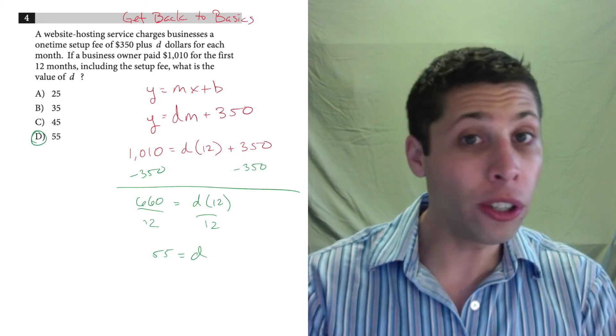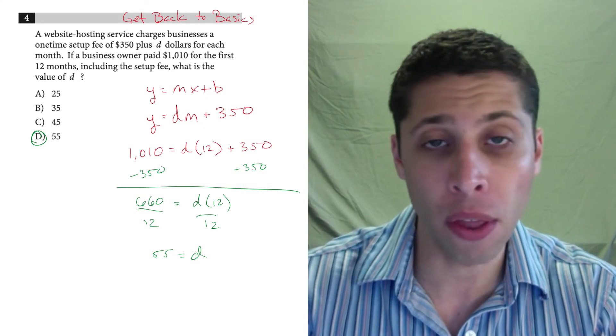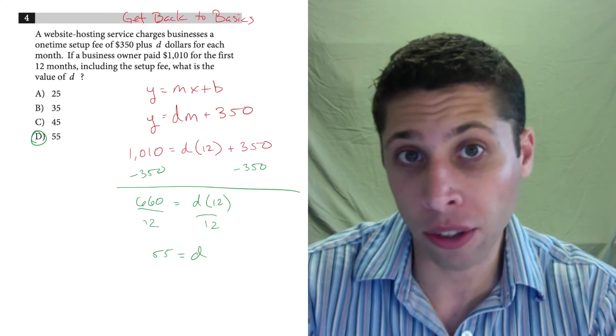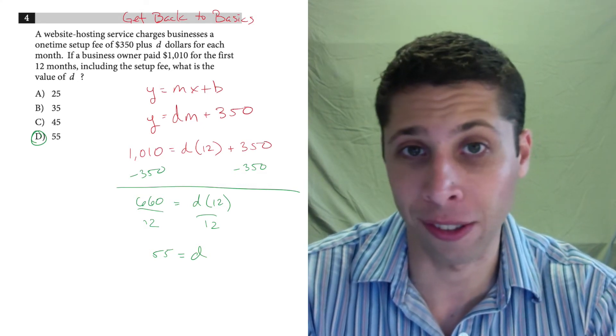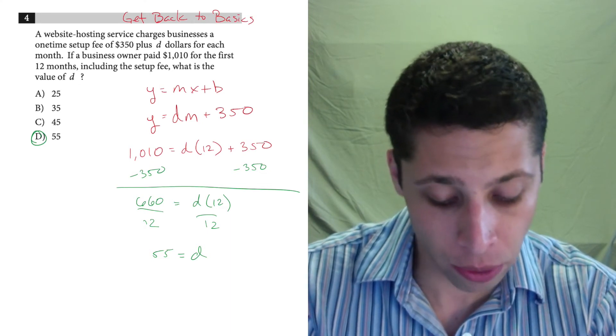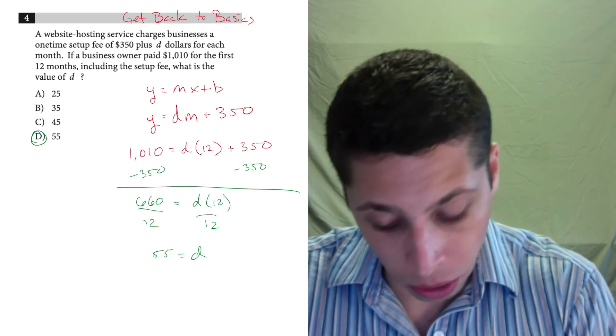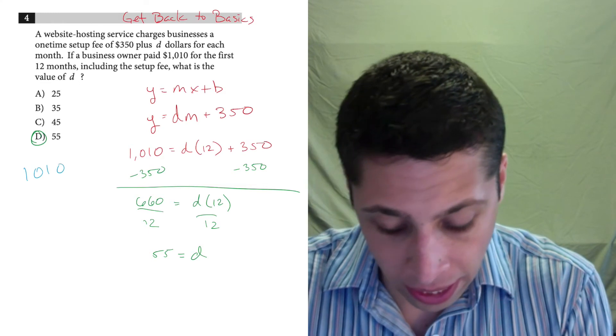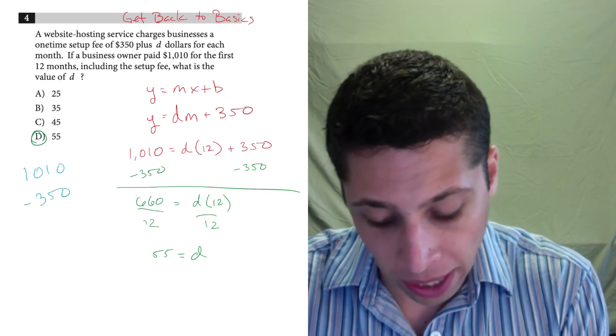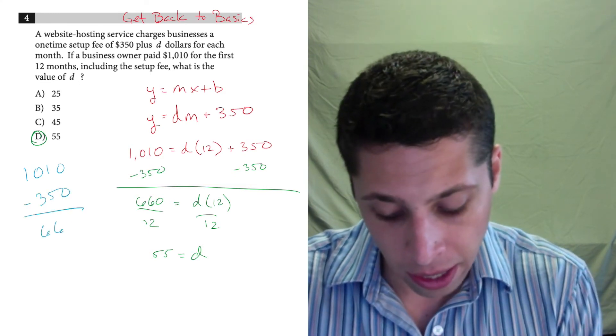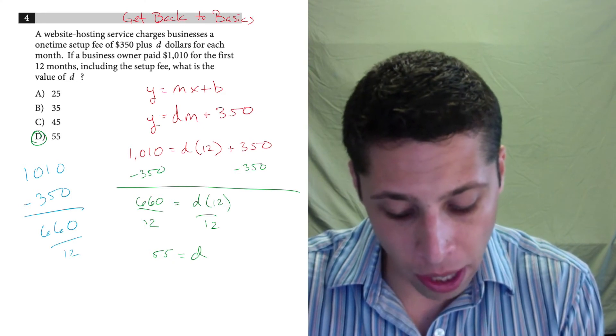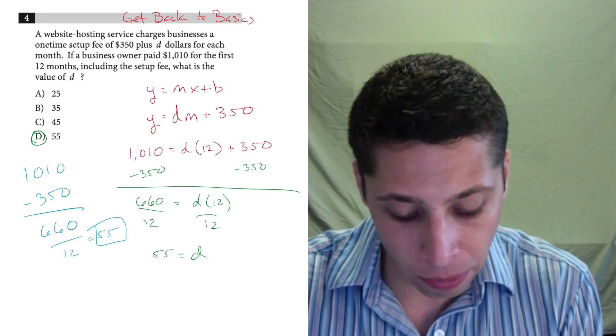But you could do this question without ever even thinking about lines. You could just kind of reason through the process and solve using arithmetic. I know that the total was $1,010, I've got to subtract out that fee and then divide the rest by 12, and that's going to be my rate.